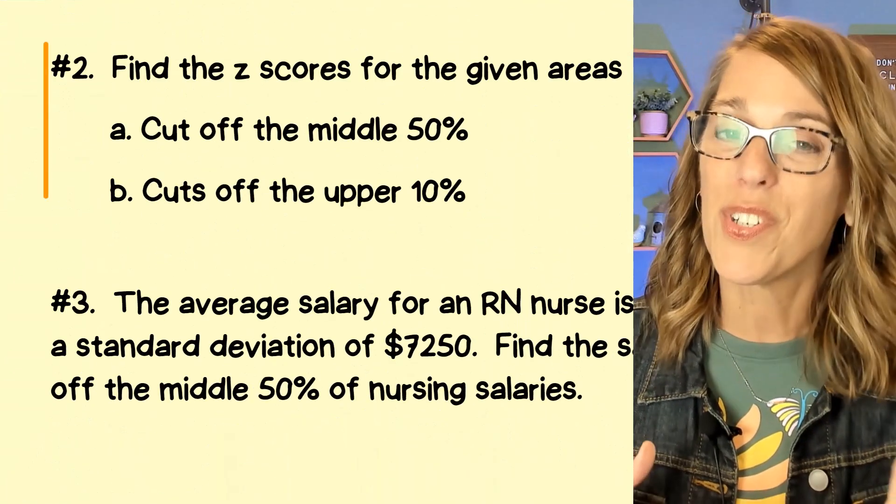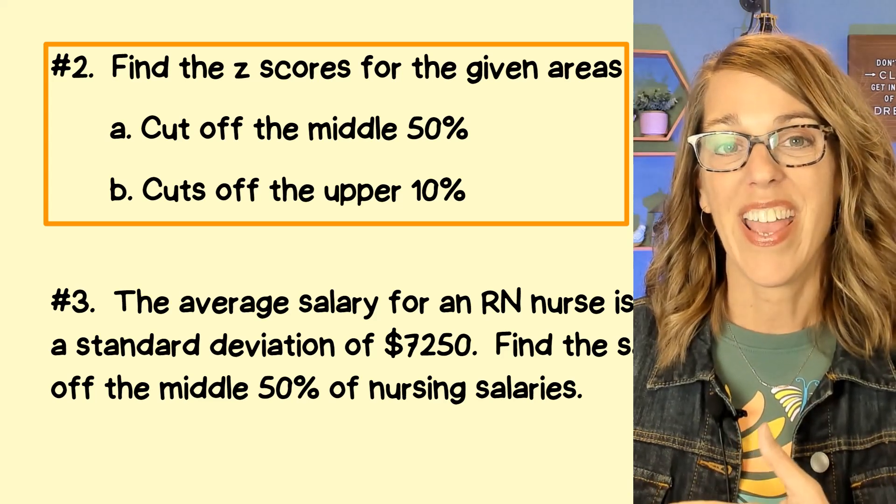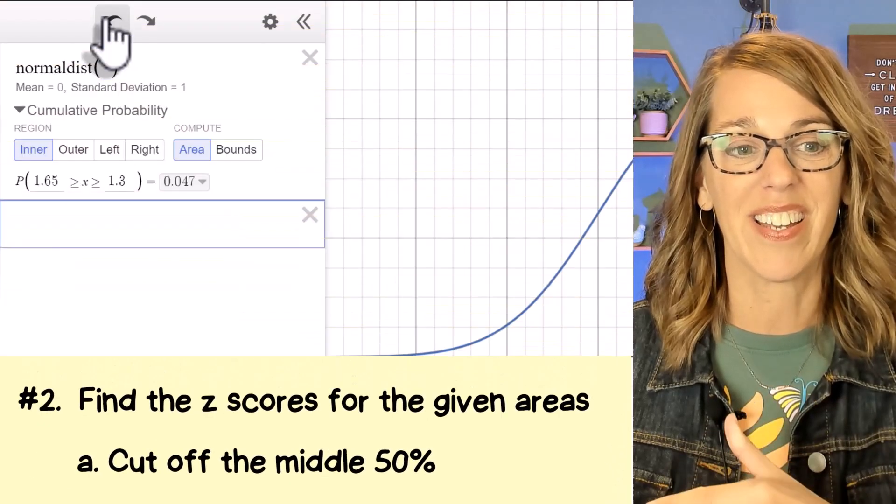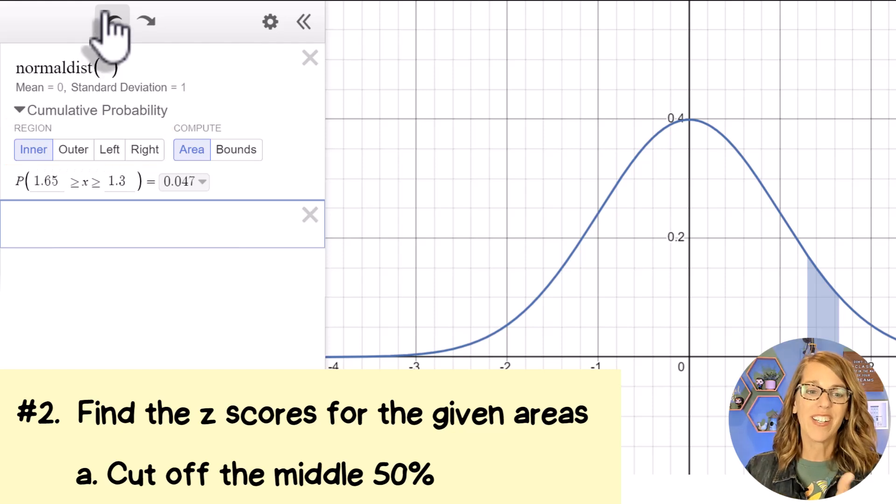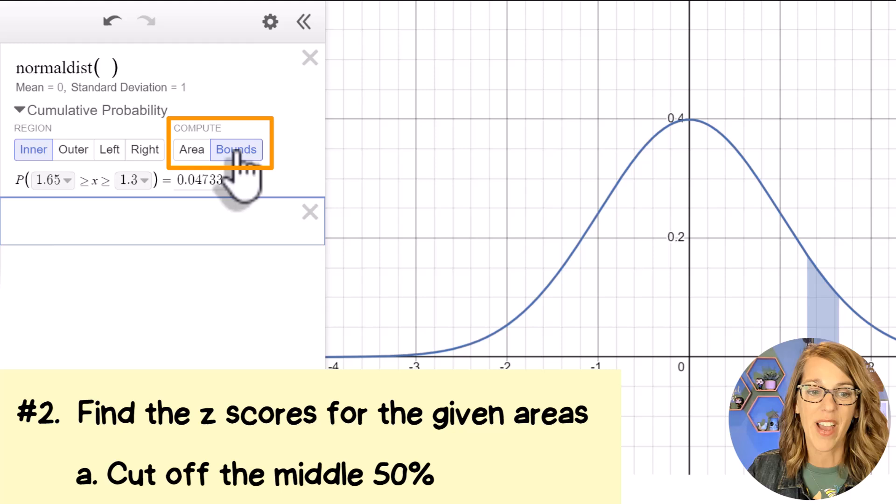Number two is a little bit different. We're asked to find z scores for these given areas. Part A asks me to find the z scores that cut off the middle 50%. So in this case, I still want to leave the region as that inner region. But I want to change from what I'm computing to an area to those bounds.